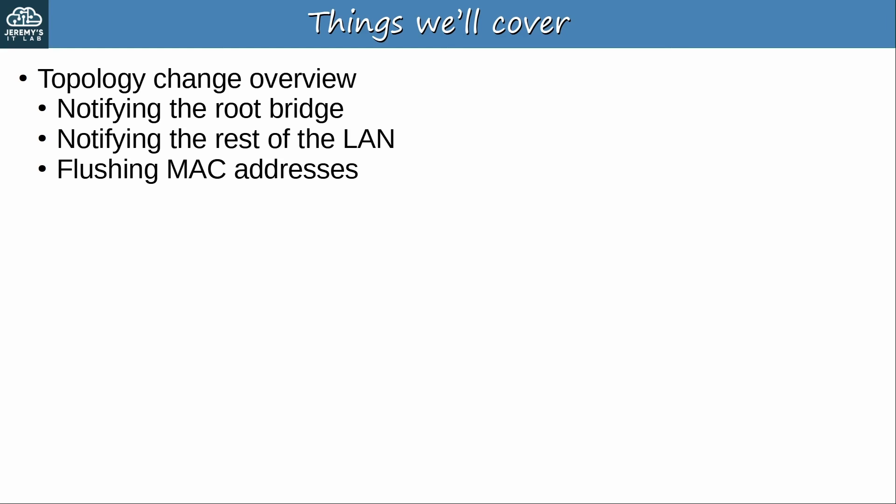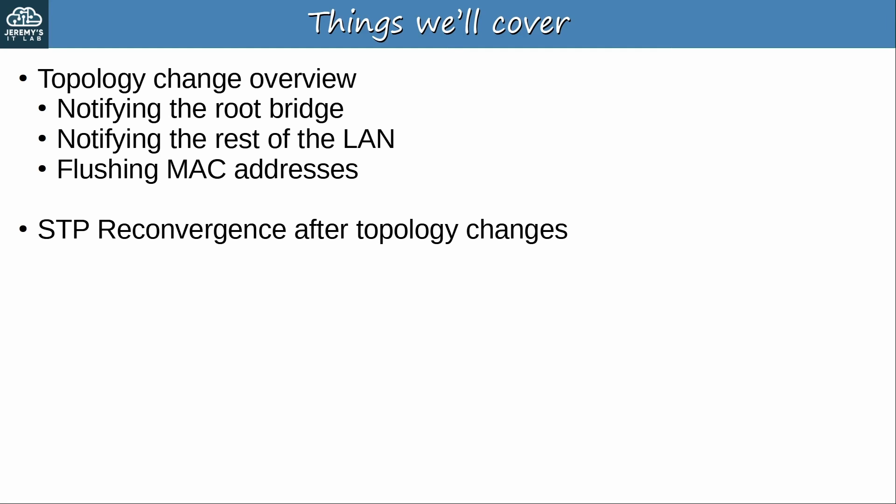Here's what we'll cover in this video. First we'll take a look at what switches do when there is a topology change, how they notify the root bridge, how the root bridge notifies the rest of the LAN, and how switches flush MAC addresses from their MAC address tables in response to a topology change. Then we'll look at how STP converges after topology changes. We covered this a bit when looking at the STP states and timers, but we'll cover it a bit more here.